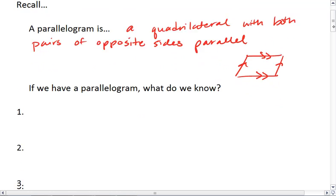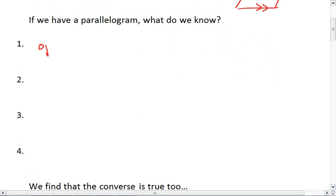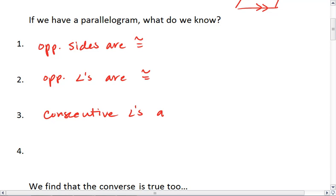If we have a parallelogram, we know four things. We know that opposite sides are congruent, that opposite angles are congruent, that consecutive angles are supplementary, and that diagonals bisect each other.